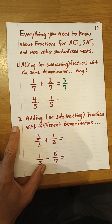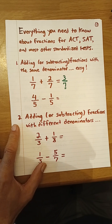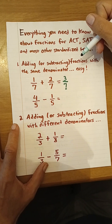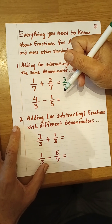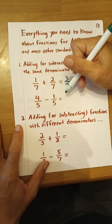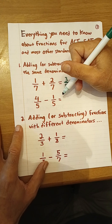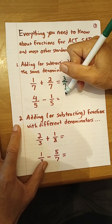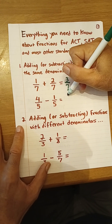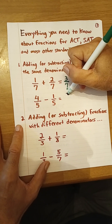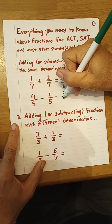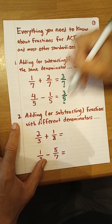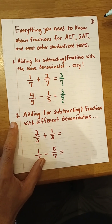If you're subtracting fractions with the same denominator, it's the same thing, only we're subtracting. So 4/5 minus 1/5 is 4 minus 1, which is 3, over 5 — and there we go.